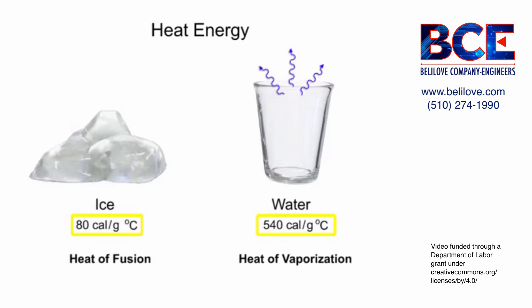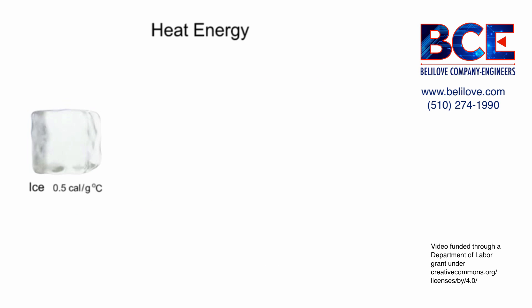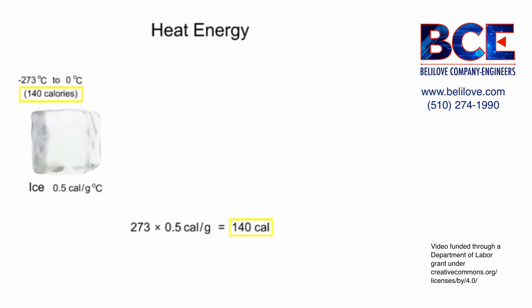With these values, it's easy to calculate exactly how many calories of heat energy are required to transform 1 gram of ice at absolute zero to steam. To warm 1 gram of ice from minus 273 degrees Celsius to 0 degrees Celsius would be 273 times 0.5 calories per gram, or about 140 calories.